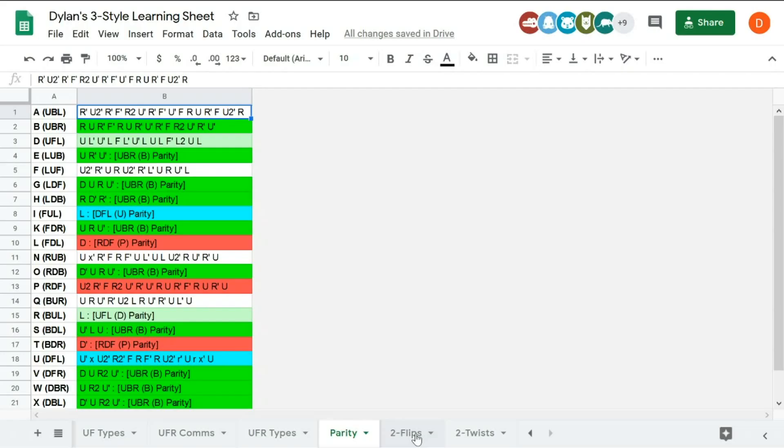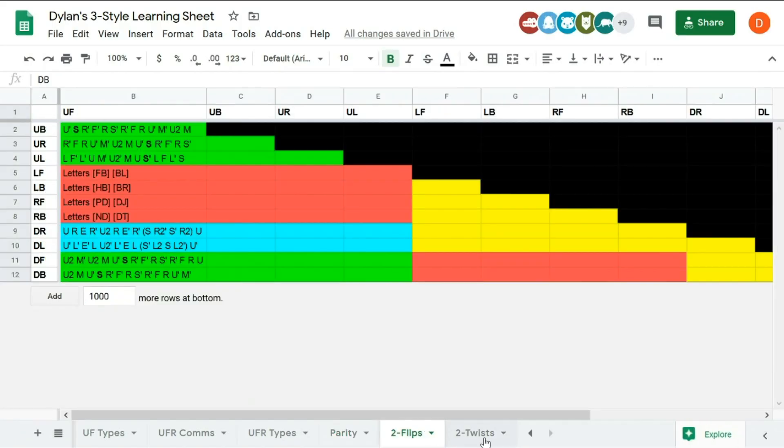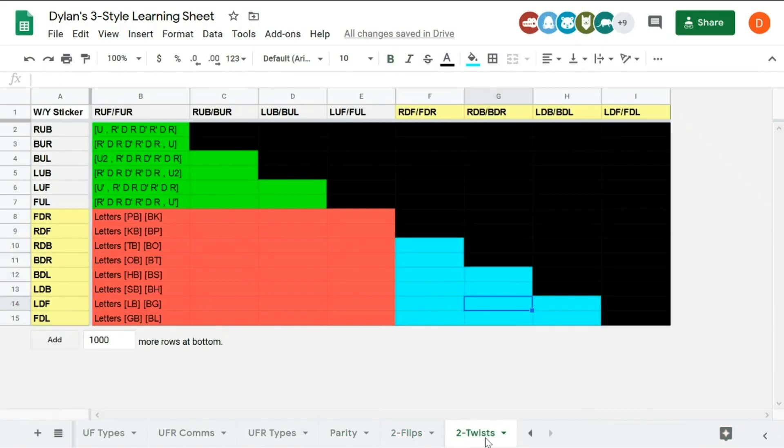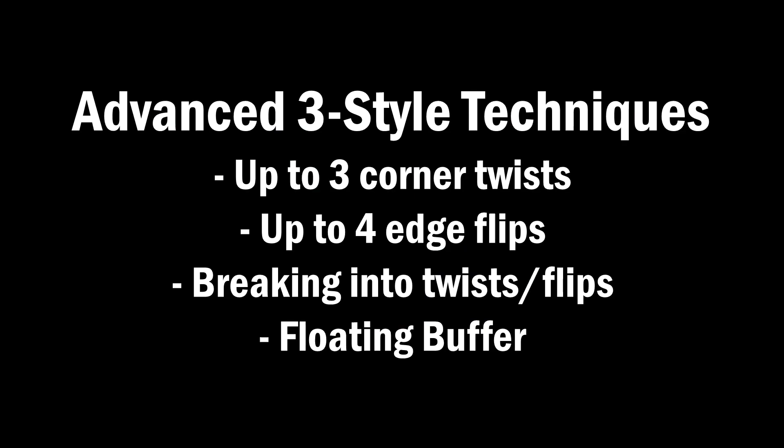This video should have covered all the cases on how to twist and flip one corner or one edge outside the buffer. But if you're ever not sure, you can check the 3-style learning sheet in the description. This is the simplest way you can approach flips and twists, but it is not the optimal way to do it. In my next video about 3-style, I'll cover how to do these faster, as well as some other more advanced tricks.